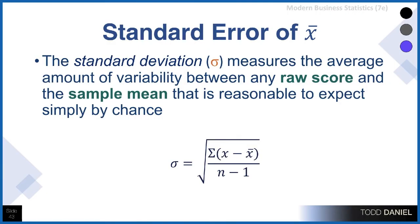We've spent a lot of time talking about sample means, but there's also a standard deviation to discuss. Remember, the standard deviation in a sample measures the average amount of variability between any given raw score and that sample mean, the amount reasonable to expect by chance. The formula: subtract the mean from each raw score, add it up, and divide by n minus 1. That gives us the variance. Taking the square root gives us the standard deviation.